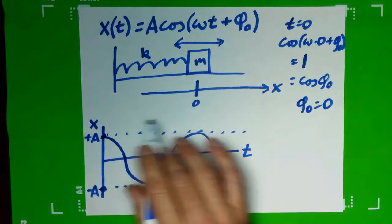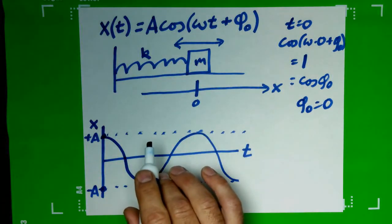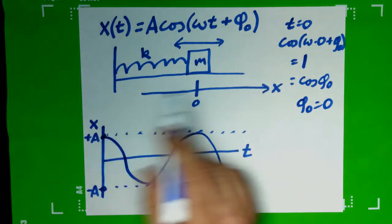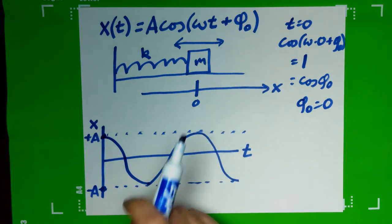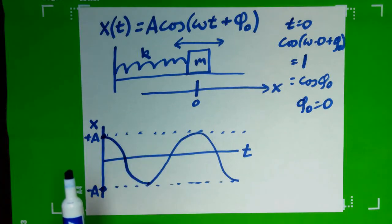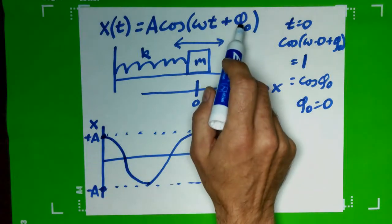Well, there's all sorts of possibilities. I could have started at any point. I could have pulled this to the side, let go, watched it oscillate for a bit, and then started my stopwatch when it was at a different position with a different velocity. And our question is, how do we find this phi zero?